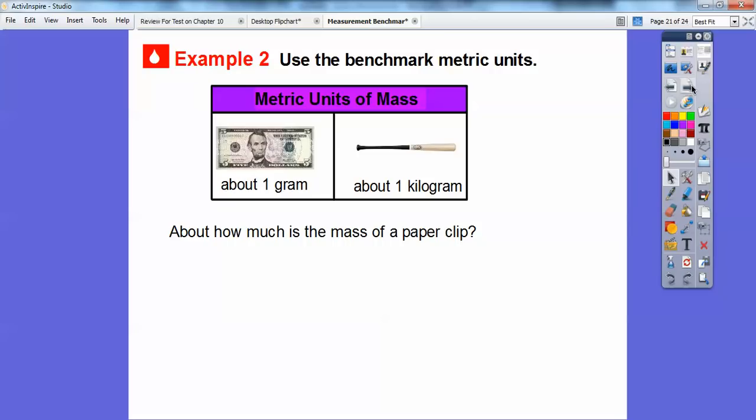All right. So we're going to use this benchmark for weight. So mass is weight. This $5 bill right here weighs about one gram. And this baseball bat weighs about one kilogram. So about how much is the mass of a paper clip? Do you think a paper clip weighs closer to one gram or one kilogram? Well, I think that it's definitely closer to this one gram right here. I think the baseball bat would be much too heavy for a paper clip right there.